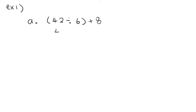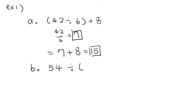Let's do the bracket first. 42 divided by 6 equals 7. We replace this number with 7, so you will get 7 plus 8. The answer will be 15. For the second part, it's going to be 54 divided by 8 minus 2. You have to do the bracket again. 54 divided by 6 equals 9. These are the answers for example number one.